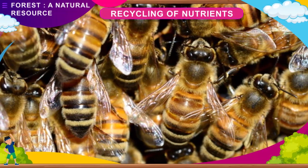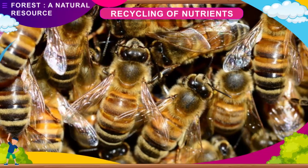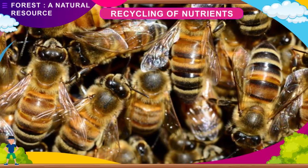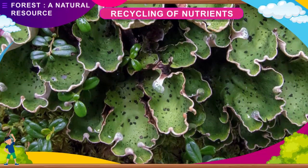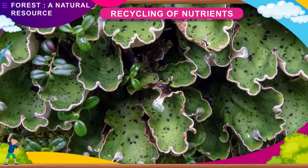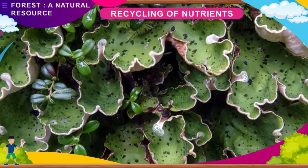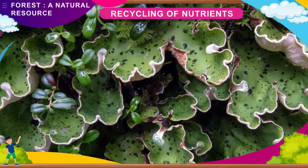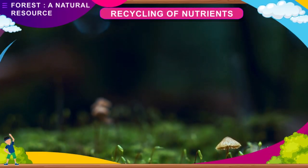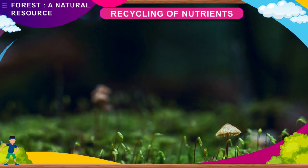In the forest, you will come across a variety of insects, spiders, squirrels, ants, butterflies and numerous other small animals. Apart from the animals which are easily seen, there are several organisms and microorganisms that live in the soil. They feed on the dead plants and animal tissues and convert them into a dark-coloured substance called humus. The microorganisms which convert the dead plants and animals to humus are known as decomposers.